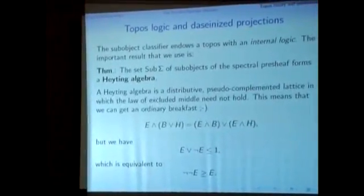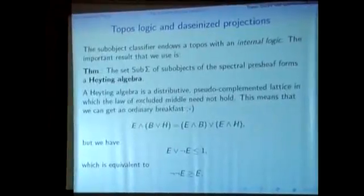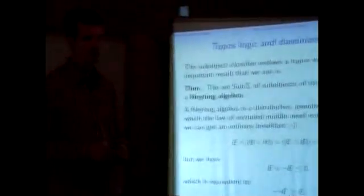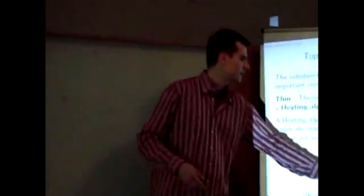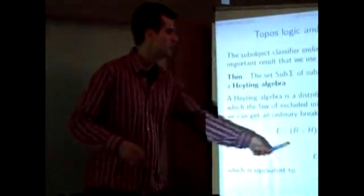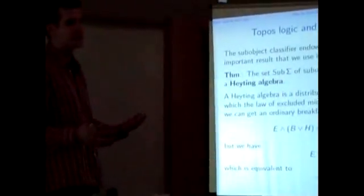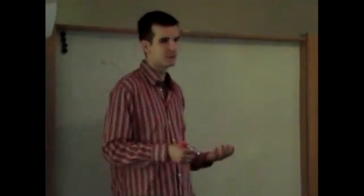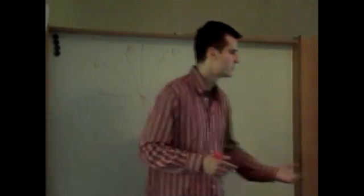But what's different from what one might expect from everyday logic is that the law of excluded middle doesn't need to hold. So E or not E generally is not the identity or the maximal element in the Heyting algebra. It can be smaller. This is equivalent to not not E is not greater than or equal to E.